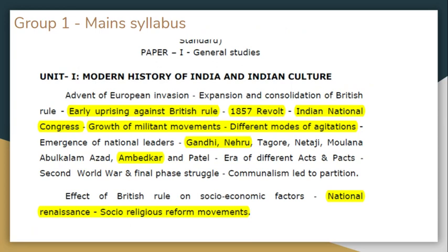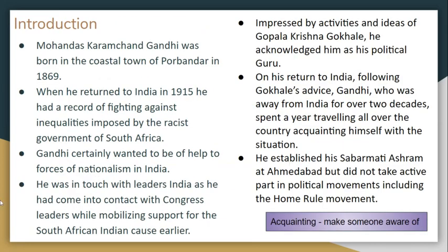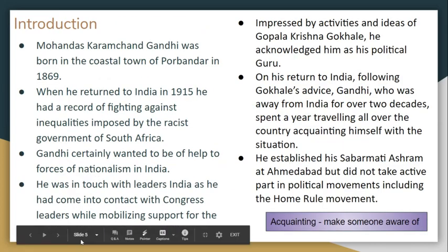The main topic is in the General Studies paper, Unit 1, Modern History of India and Indian Culture: growth of militant movements, different modes of resistance, and the emergence of national leaders Gandhi, Nehru, and Ambedkar. This is the third part of the video, slide 36.